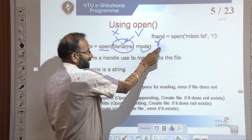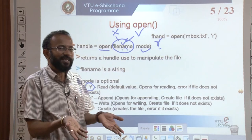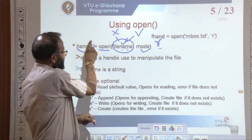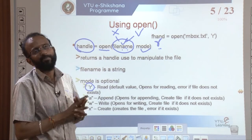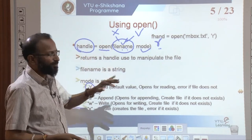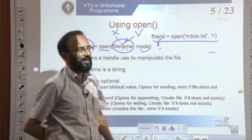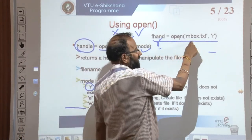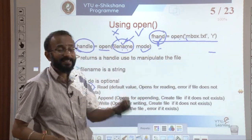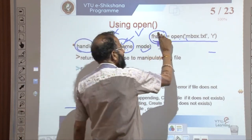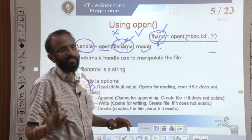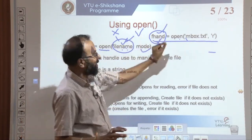If I want to open in read mode and my file does not exist, it will throw an error saying the file does not exist. An example: we call the function open where the file name is mbox.txt and the mode is read — fhand is our file handler variable. This file handler is used for further processing. We never refer to mbox.txt again later — the file name is applicable only in the open command, after which we use the file handler.